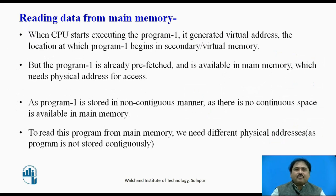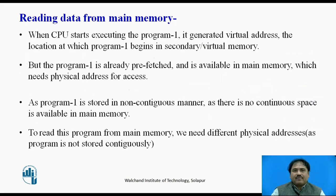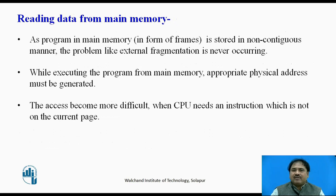The data is pre-fetched by the operating system and brought from secondary memory into physical memory. There are two options: pages can be stored in the main memory either in continuation — called contiguous memory allocation — or in different locations in the main memory, called non-contiguous memory allocation. In paging, we can store pages from secondary memory into main memory either sequentially or in a non-sequential fashion.